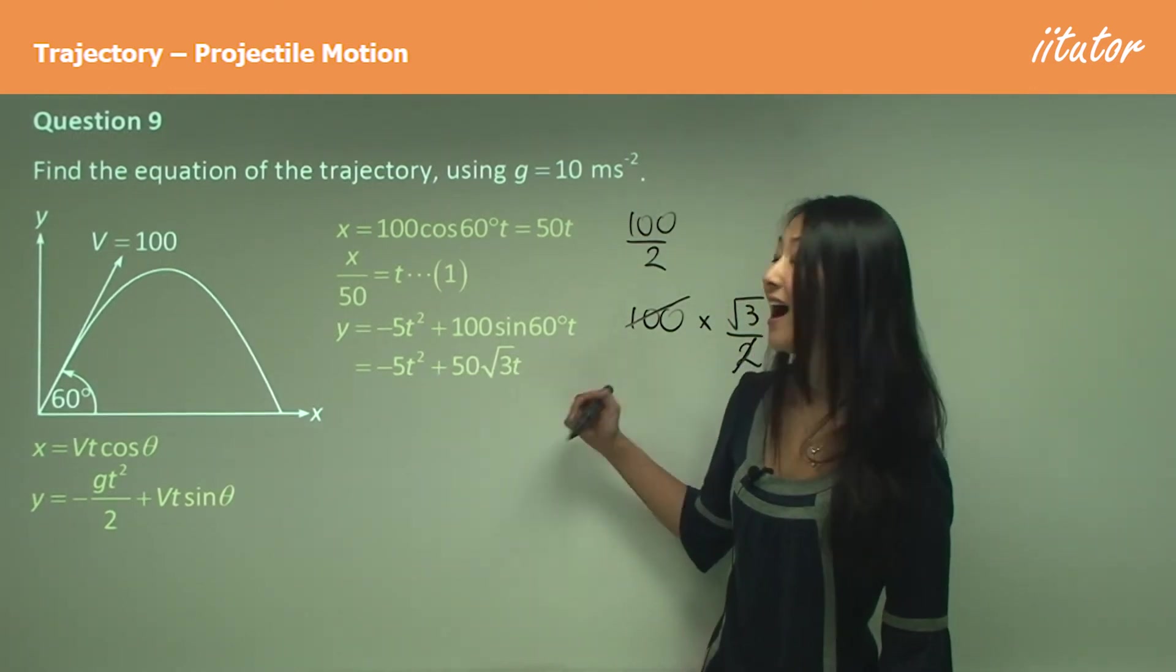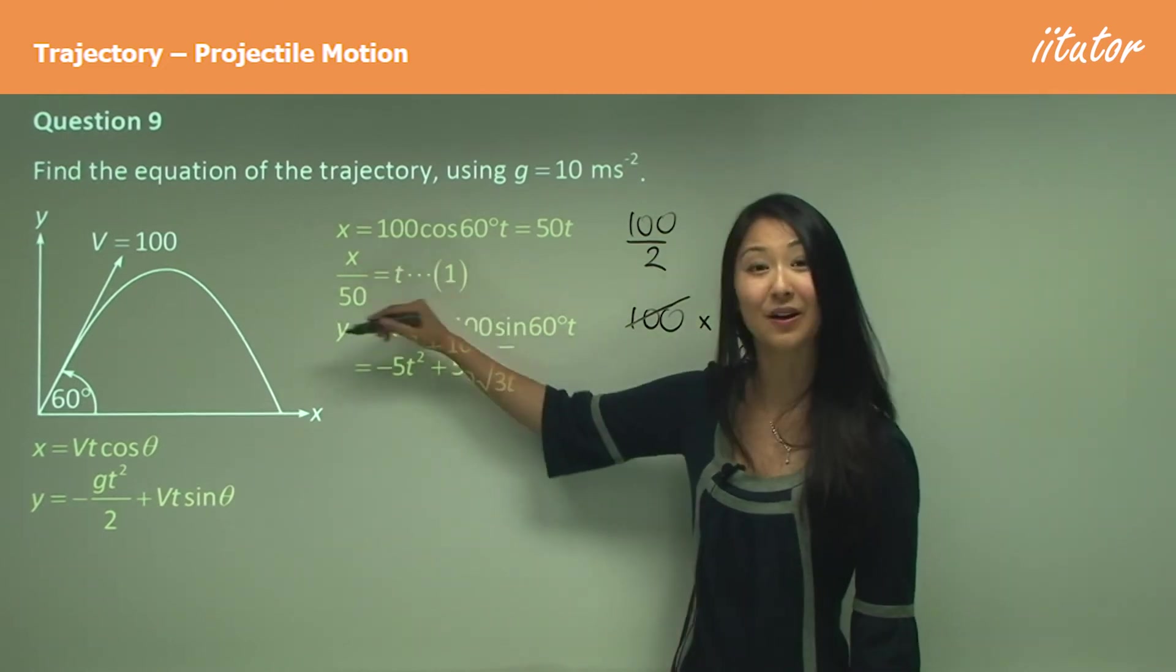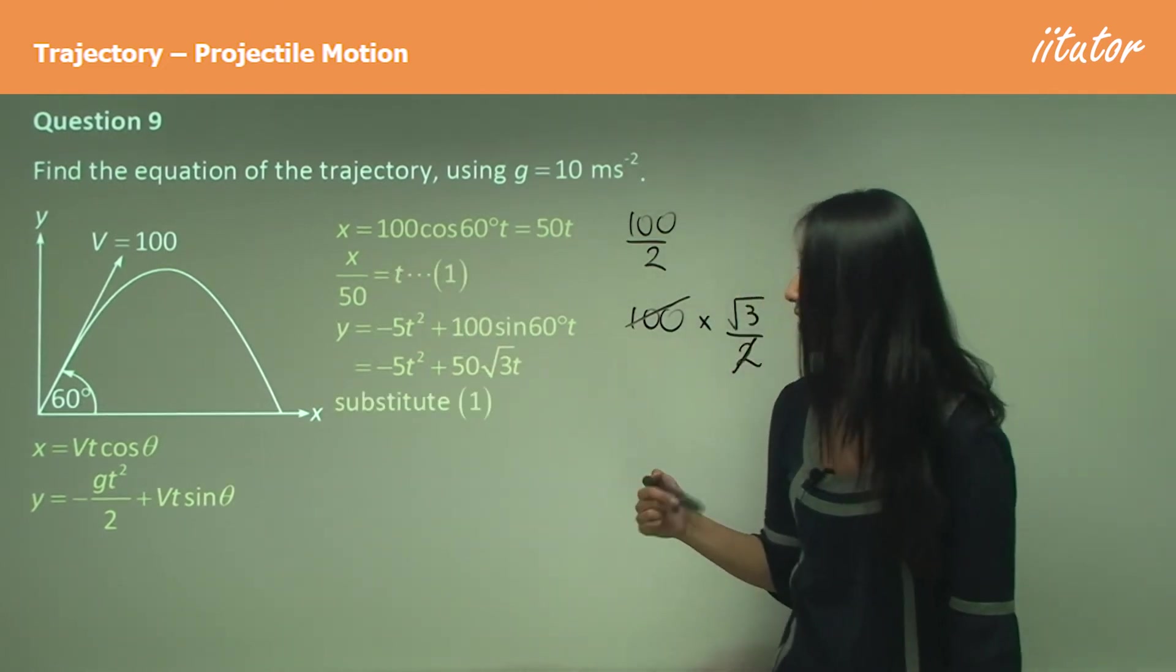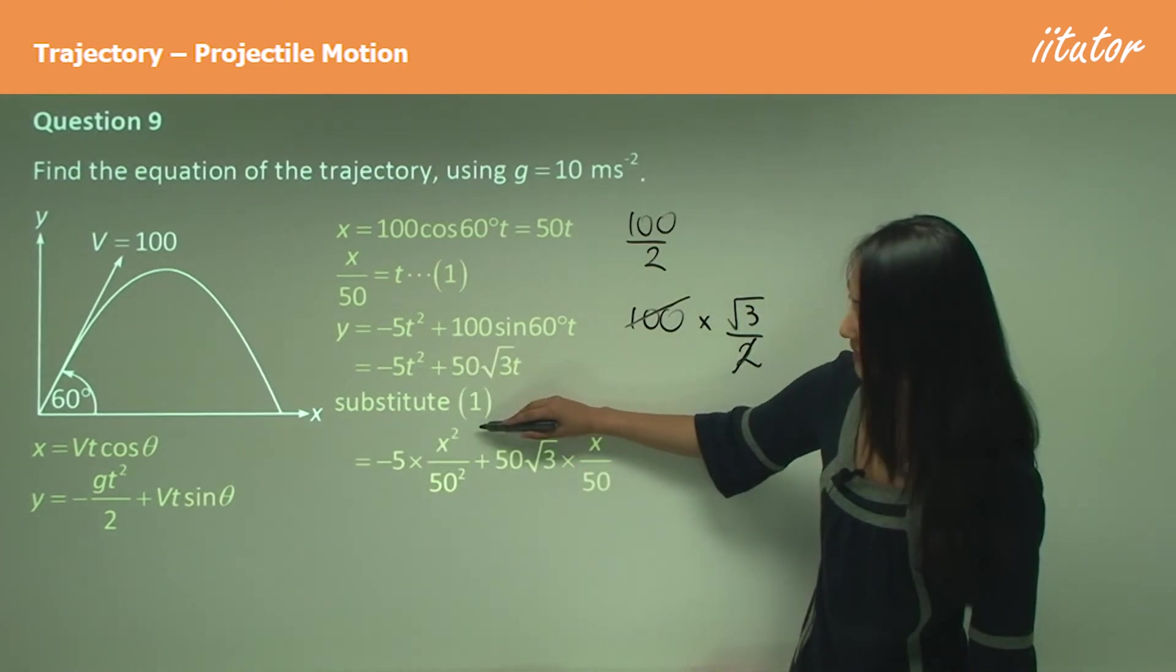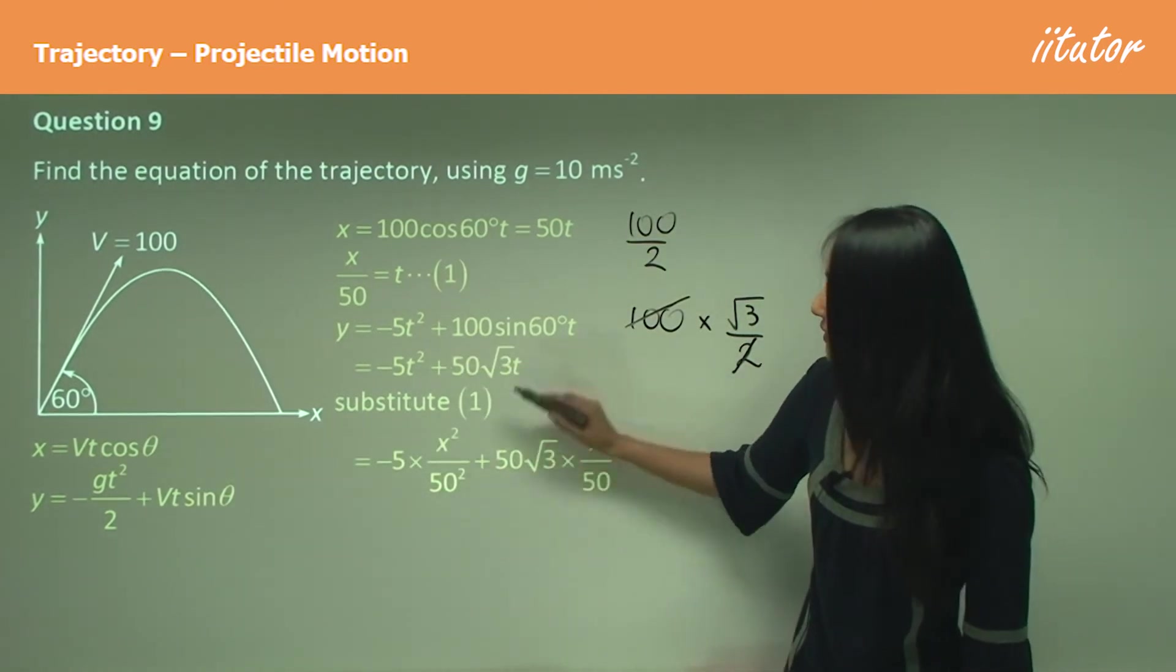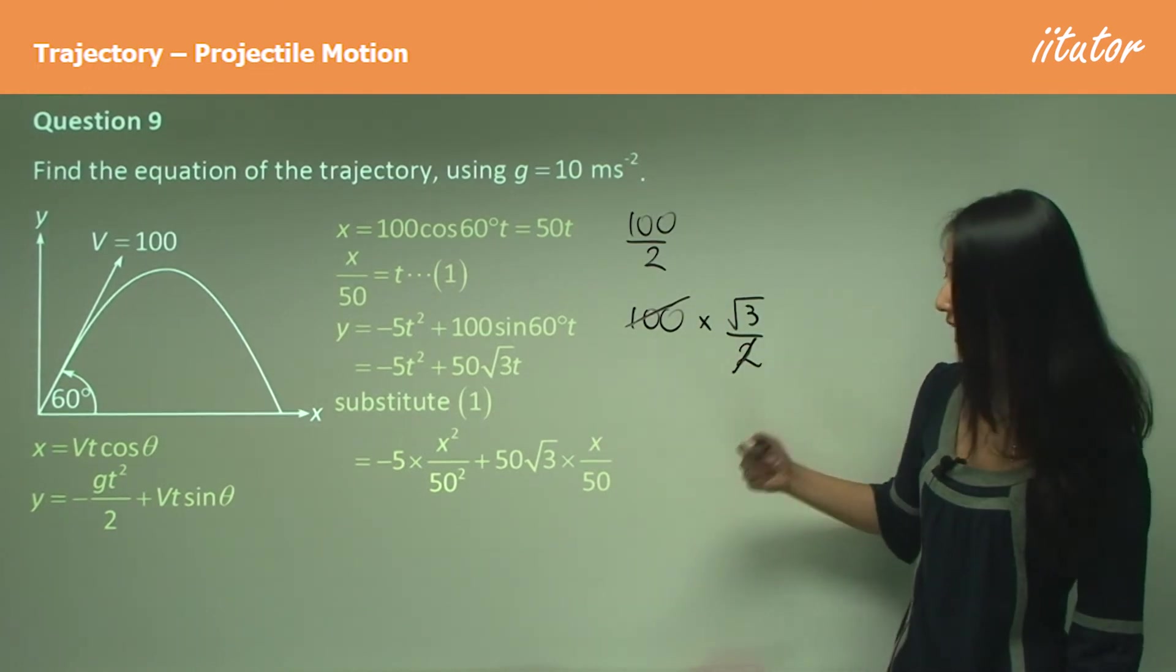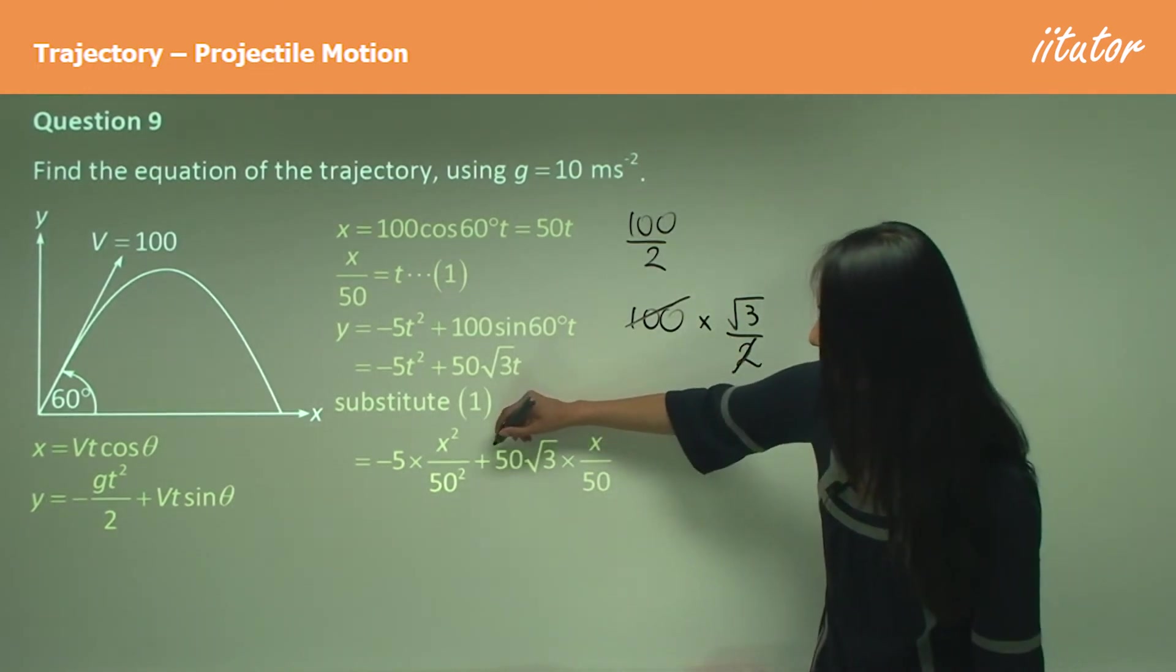Substituting that in, so t squared, this becomes x squared over 50 squared. t there, x over 50. And now simplify again. So that 50 is going to cancel with that 50 there.